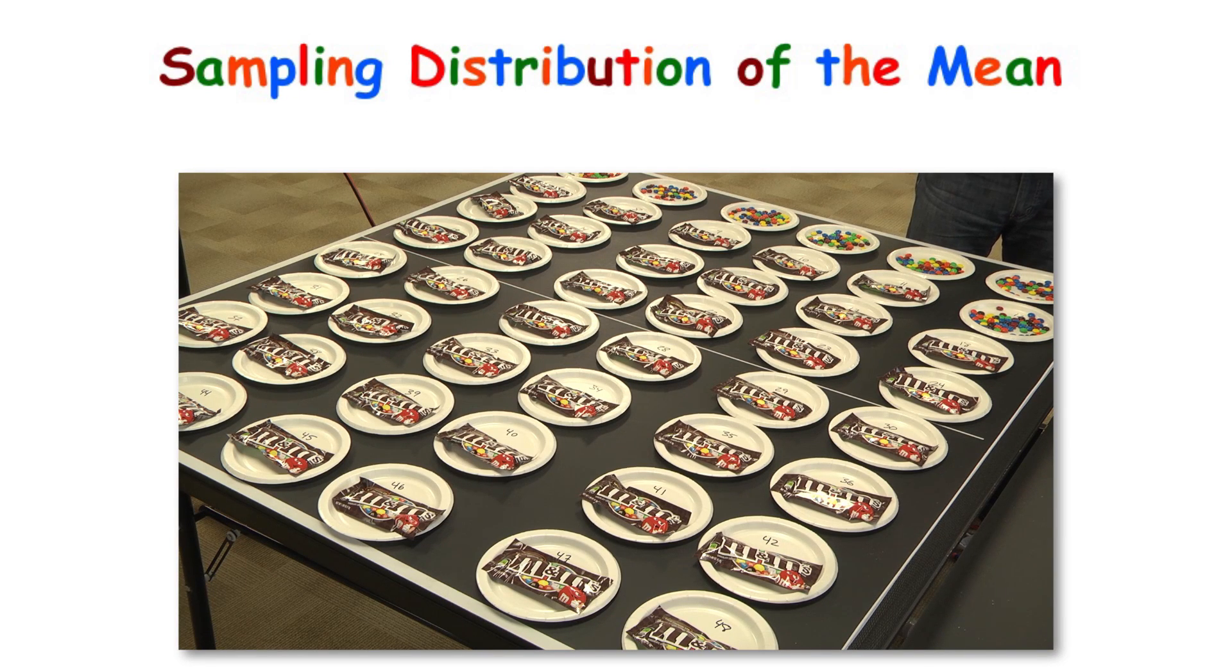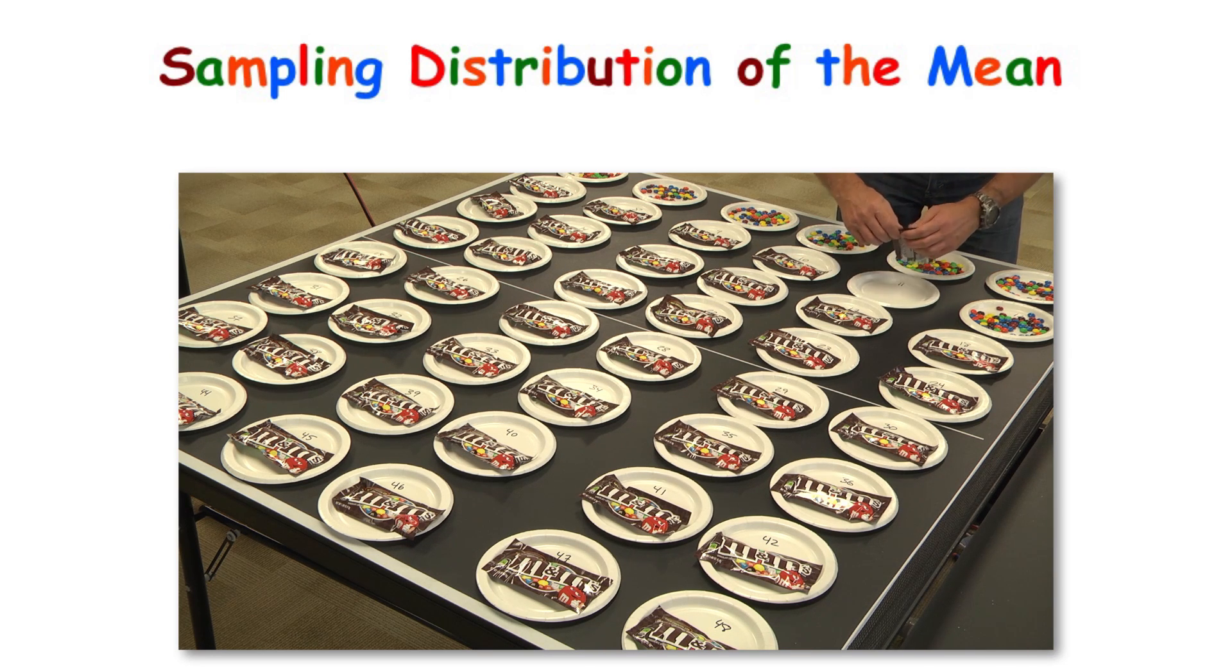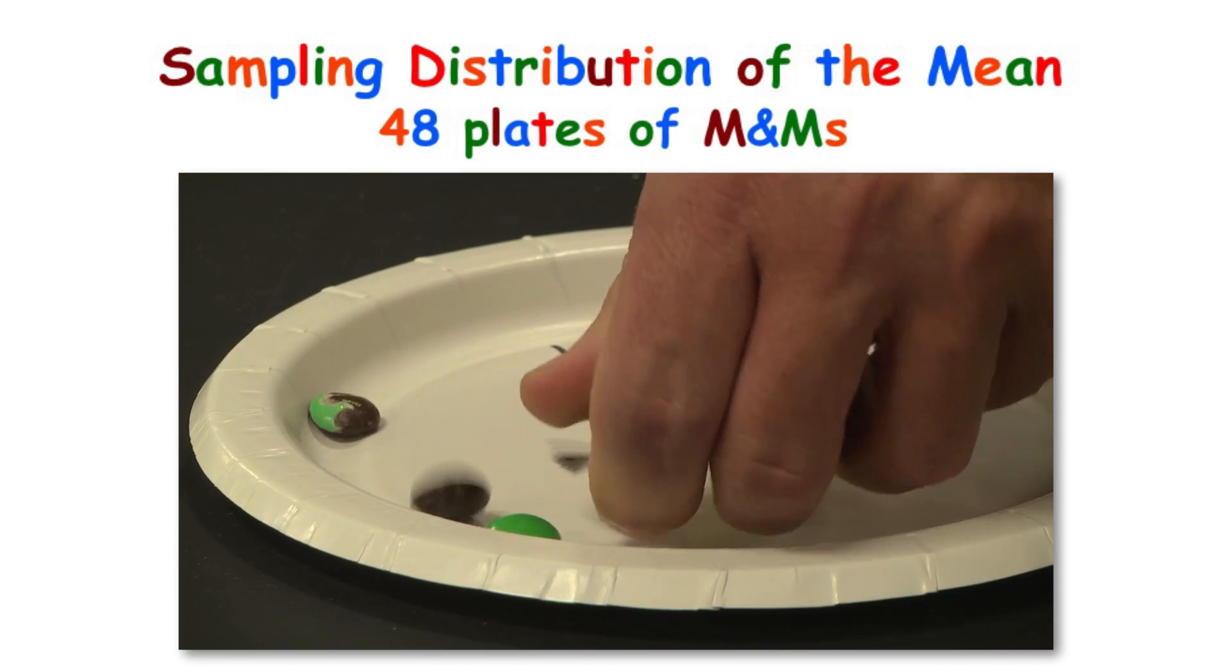What we have here today is a sweet demonstration of the sampling distribution of the mean, otherwise known as the distribution of sample means. We've laid out 48 plates, each with a bag of M&M's on it.